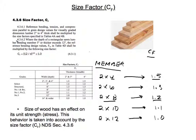Okay, now there's another part. It says here: when the depth of the rectangular sawn lumber bending member 5 inches or thicker exceeds 12 inches, the reference bending design values FB in Table 4d shall be multiplied by the following size factor. We have right here this equation: CF equals 12 divided by D to the 1/9, and it has to be equal to or less than 1.